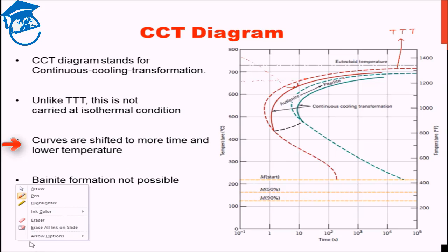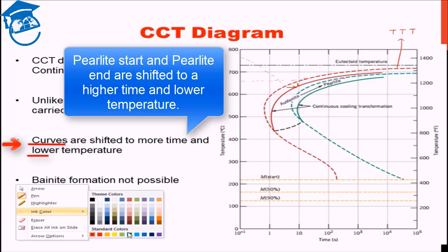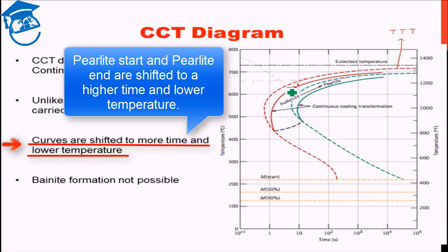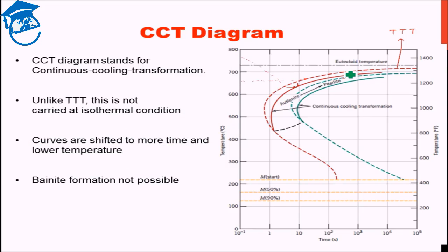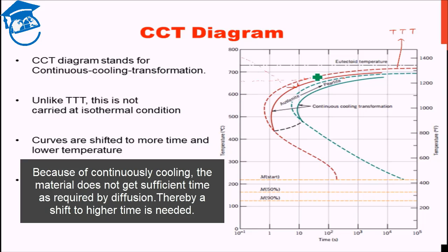So what happens is the pearlite formation, pearlite start and pearlite finish will be shifted to higher time and lower temperature. Why lower temperature? Because obviously, since you are continuously cooling, it does not have a sufficient amount of time at a particular temperature and diffusion will require further more time now.